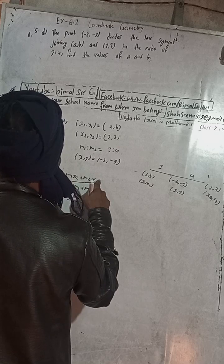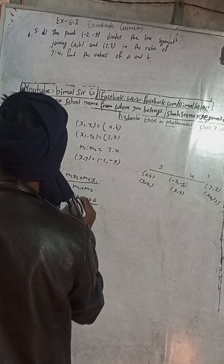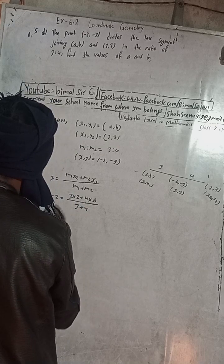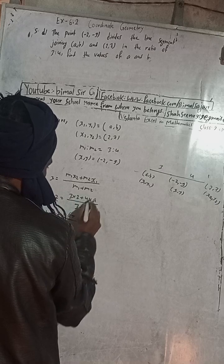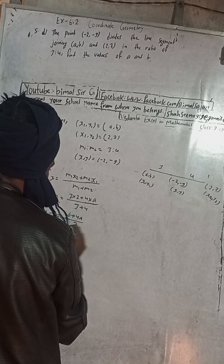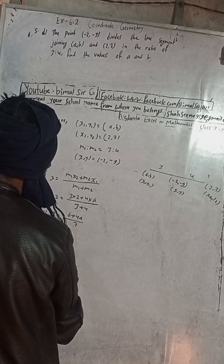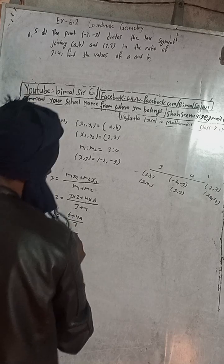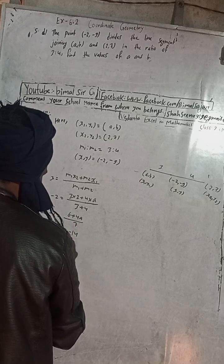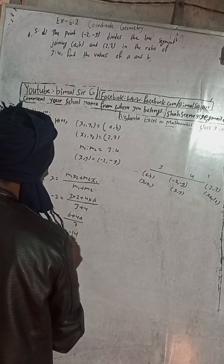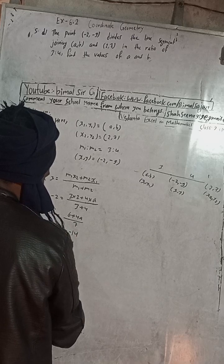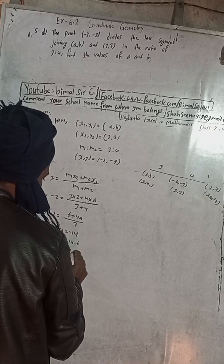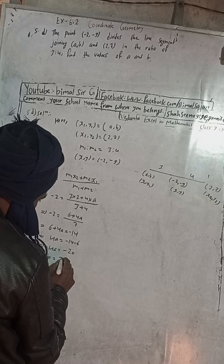This is m1 plus m2, 3 plus 4. Now try to solve this. -2 is equal to 3×2 is 6 plus 4a, divided by 3 plus 4 is 7. So 6 plus 4a is equal to 7×(-2) is -14. This gives 4a is equal to -14 minus 6, so 4a is equal to -20. This implies a is equal to -5.